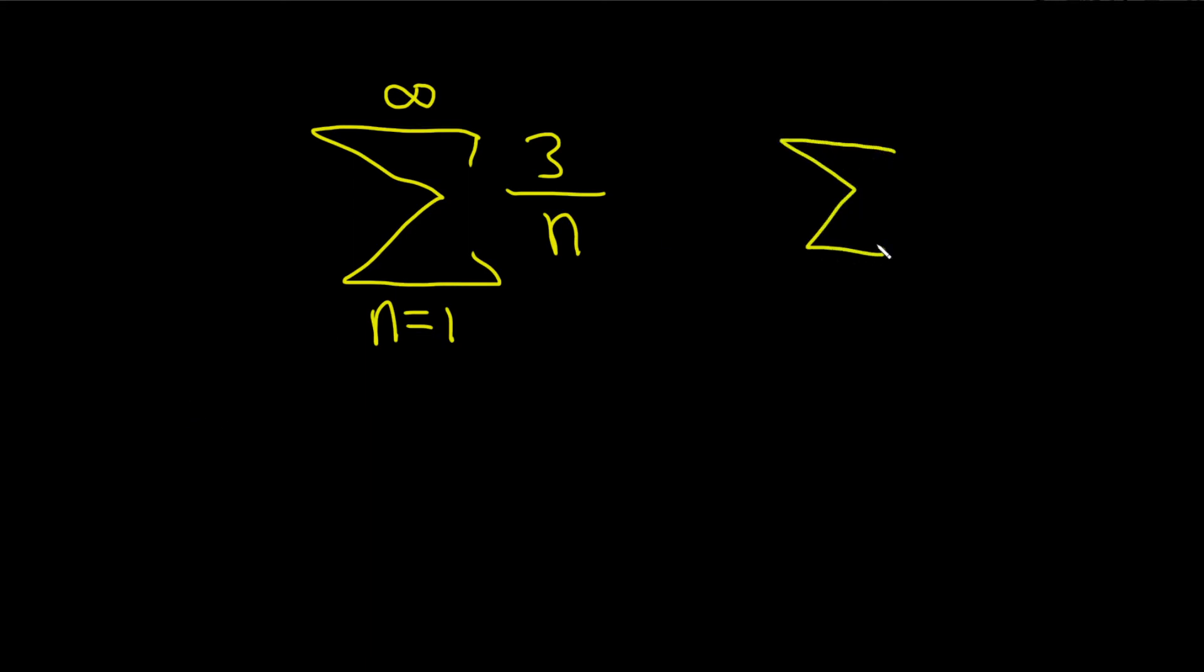So this series here, from 1 to infinity of 1 over n, is called the harmonic series. The harmonic series diverges—this is a divergent series.